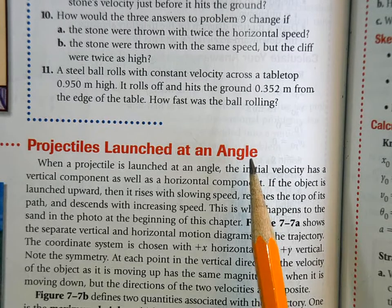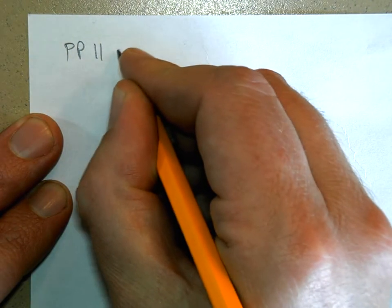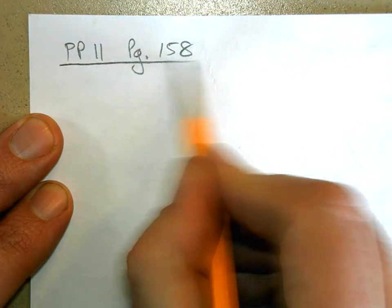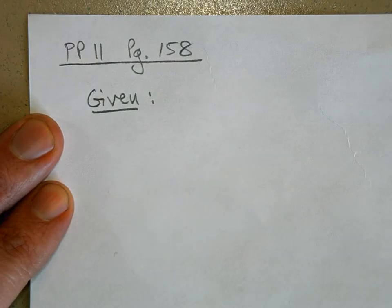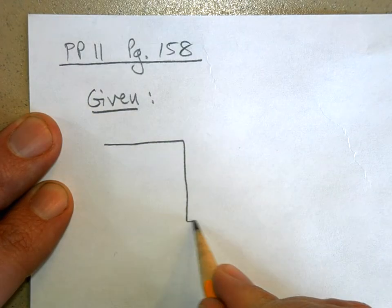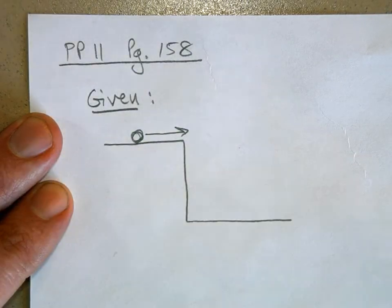Okay, so let's get it set up. This is practice problem 11 on page 158. So let's write down what's given. I've got a steel ball, it rolls with constant velocity across the tabletop that's 0.95 meters high. So here's my tabletop, here's the table, here's the floor. Here's a little marble and it's rolling with constant velocity across that.